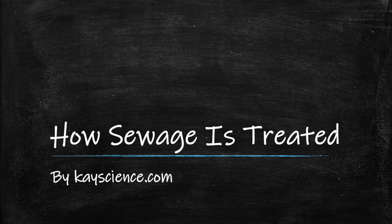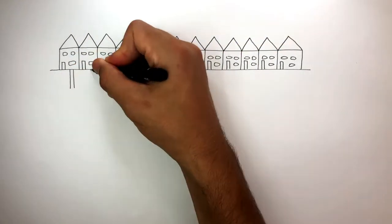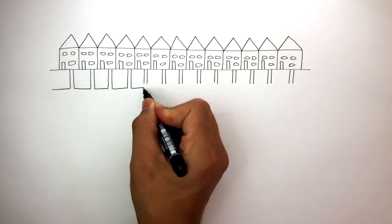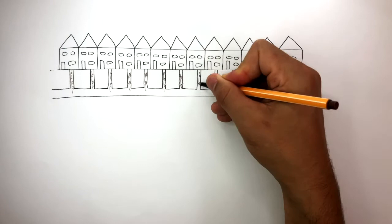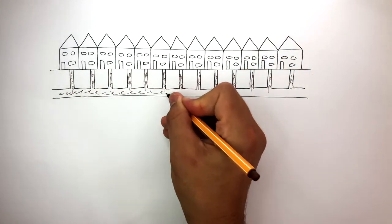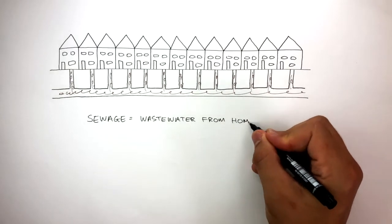How Sewage is Treated by KScience.com. This diagram represents a neighborhood where every house is connected to the sewage system by pipes. Every day each household releases wastewater from the house to the pipes and this is what sewage is: wastewater from homes and businesses.